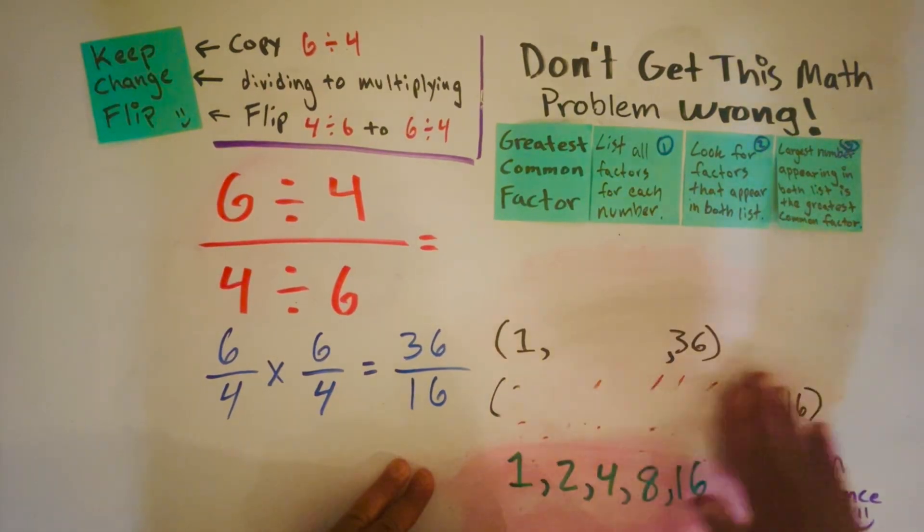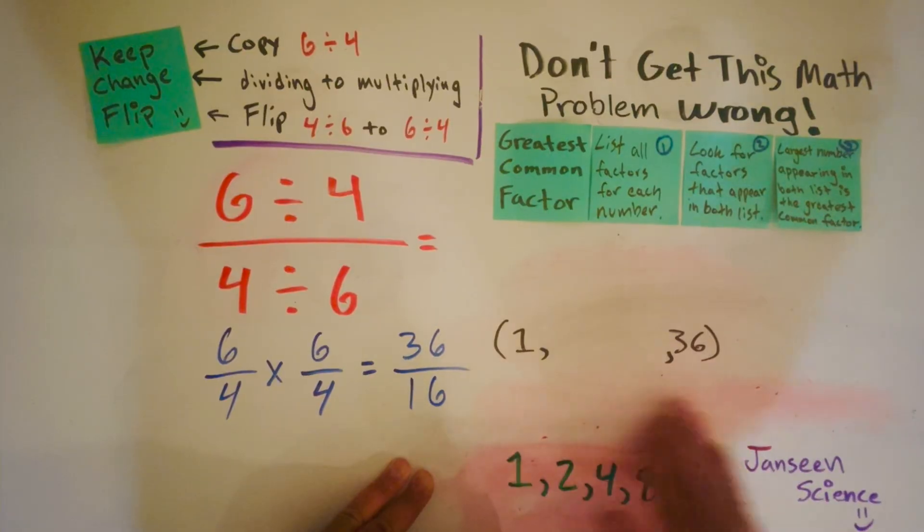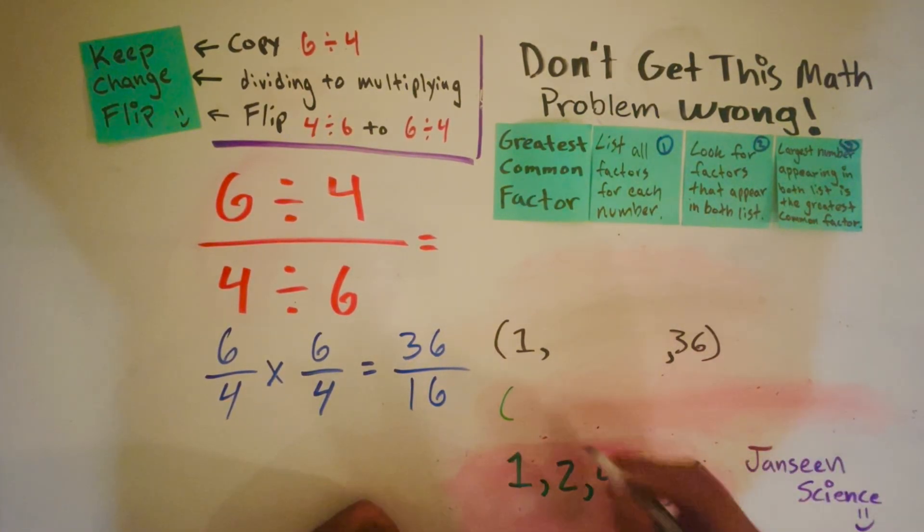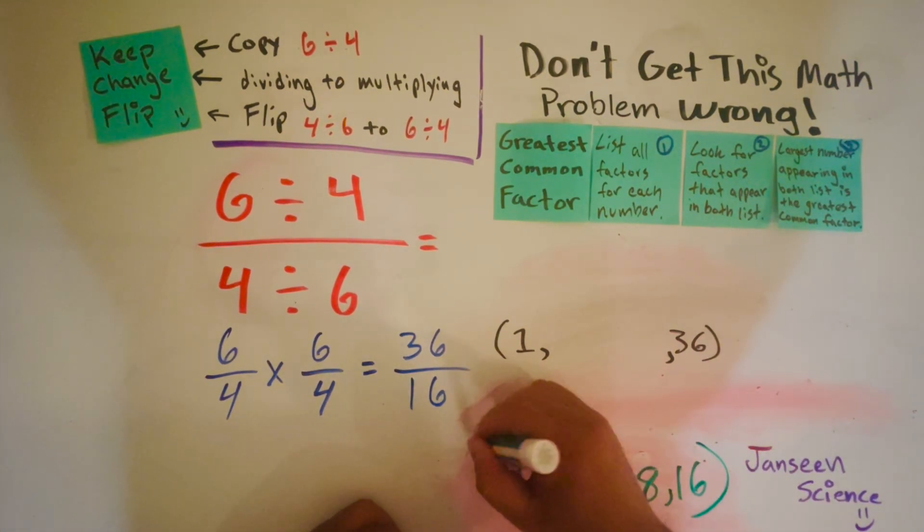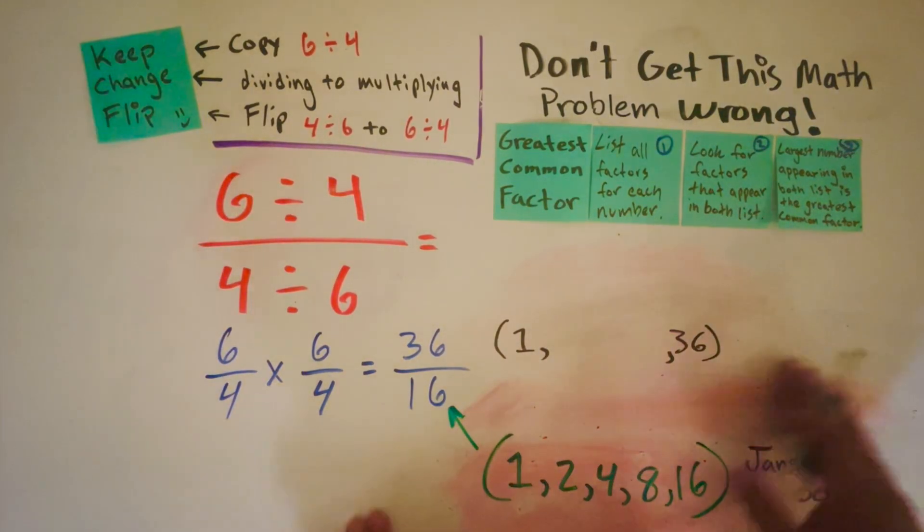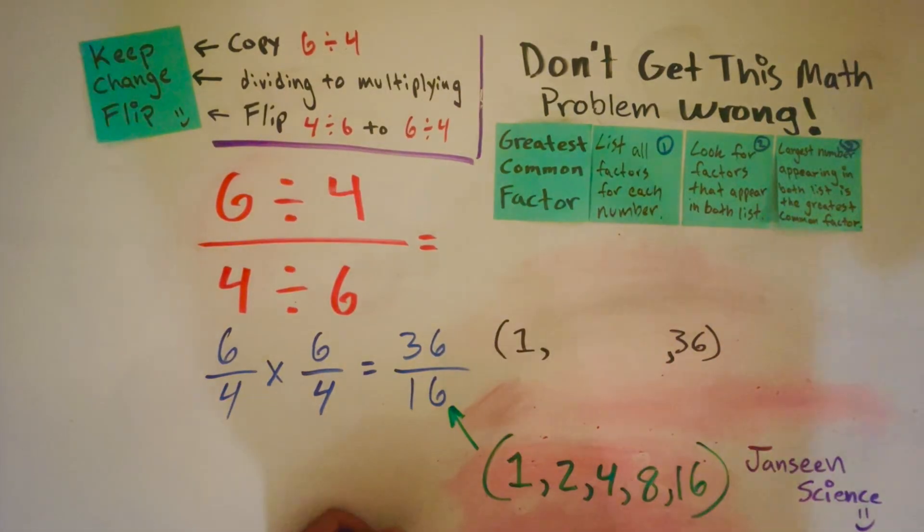So I'm going to use a different color, the color green. Those are 1, 2, 4, 8, and 16. Let me erase all this. Let's go ahead and tackle 36. These are the factors of 16: 1, 2, 4, 8, and 16.